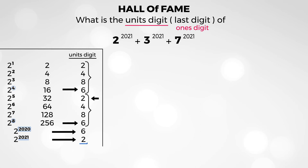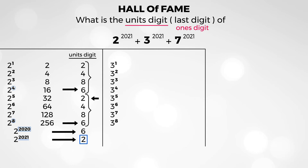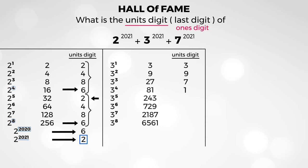So we got the units digit of the first term. In a very similar way, let's now work with 3. For 3 to the power of 1 through 3 to the power of 8, the units digits are: 3, 9, 7, 1, 3, 9, 7, 1.